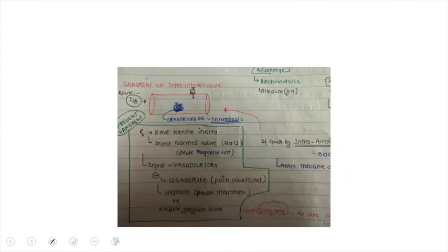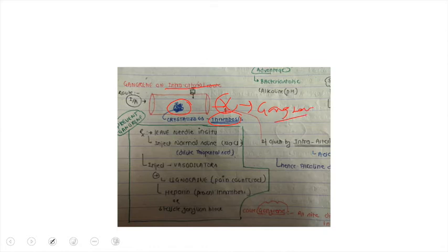When this drug is given by the intra-arterial route, the drug crystallizes, resulting in thrombosis, which may result in decreased blood flow manifesting with gangrene.